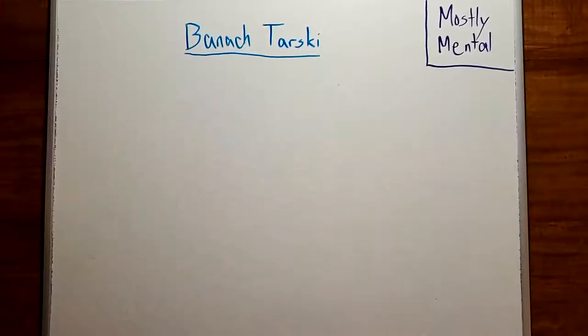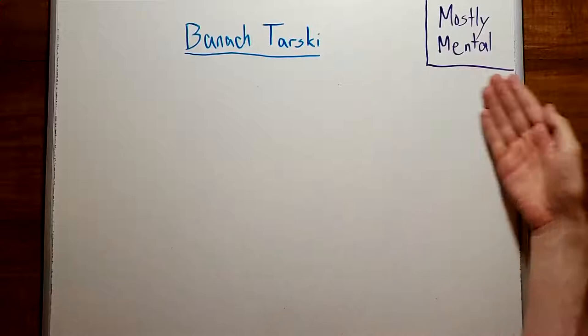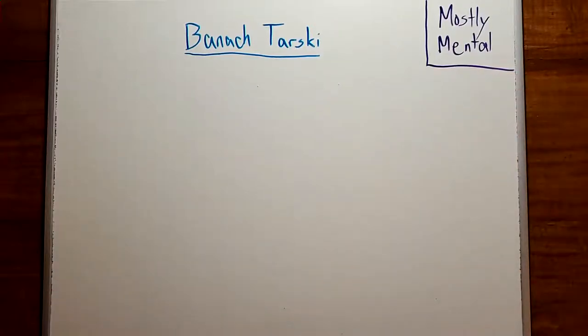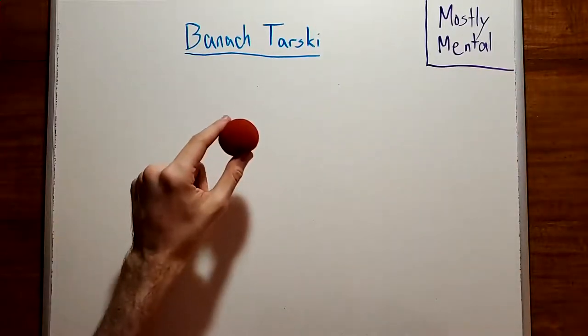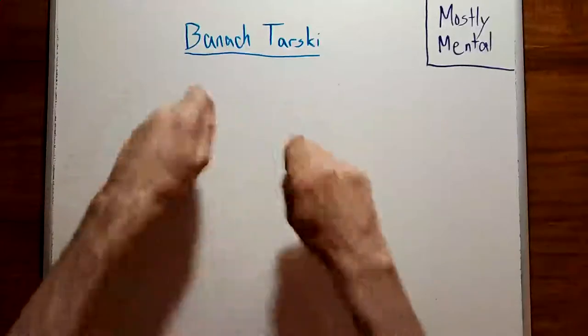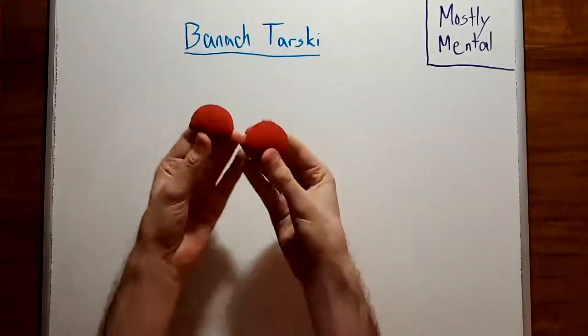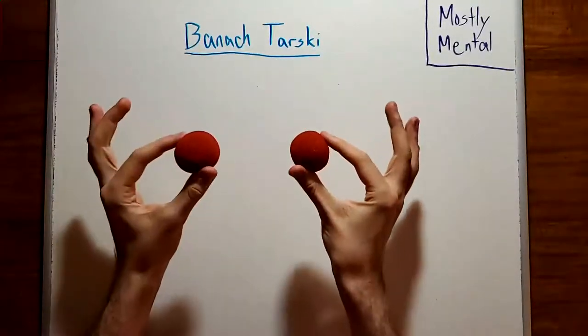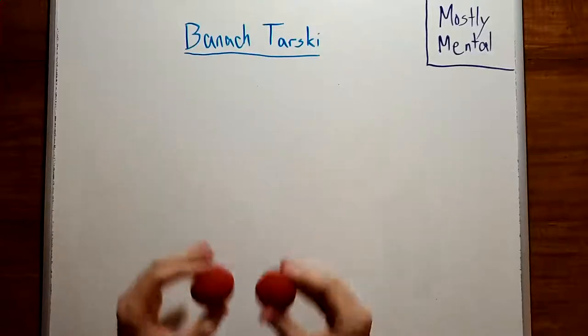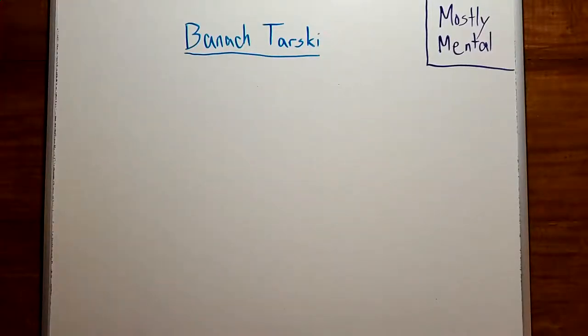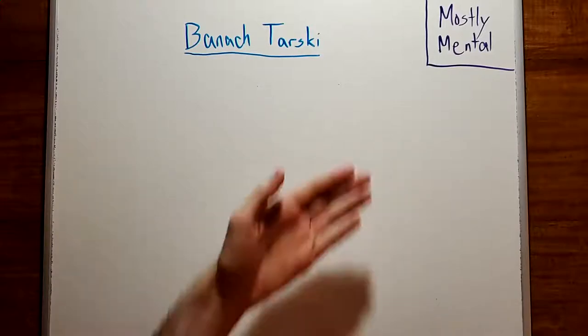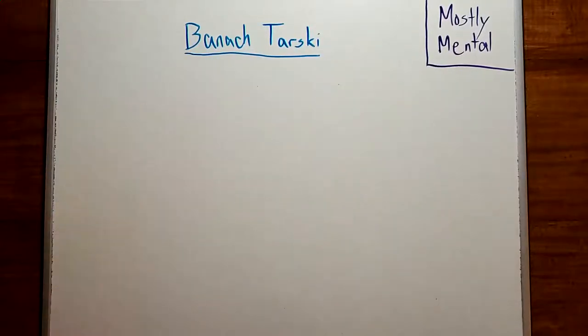Hello everyone, Foxy here, and welcome to Mostly Mental. Today, I'd like to take a sphere, disassemble it into pieces, and then put those pieces back together to make two spheres of the original size. That sounds impossible without sleight of hand, but using infinite sets, a bit of algebra, and the axiom of choice, we'll be able to pull it off. It's a result known as the Banach-Tarski paradox.